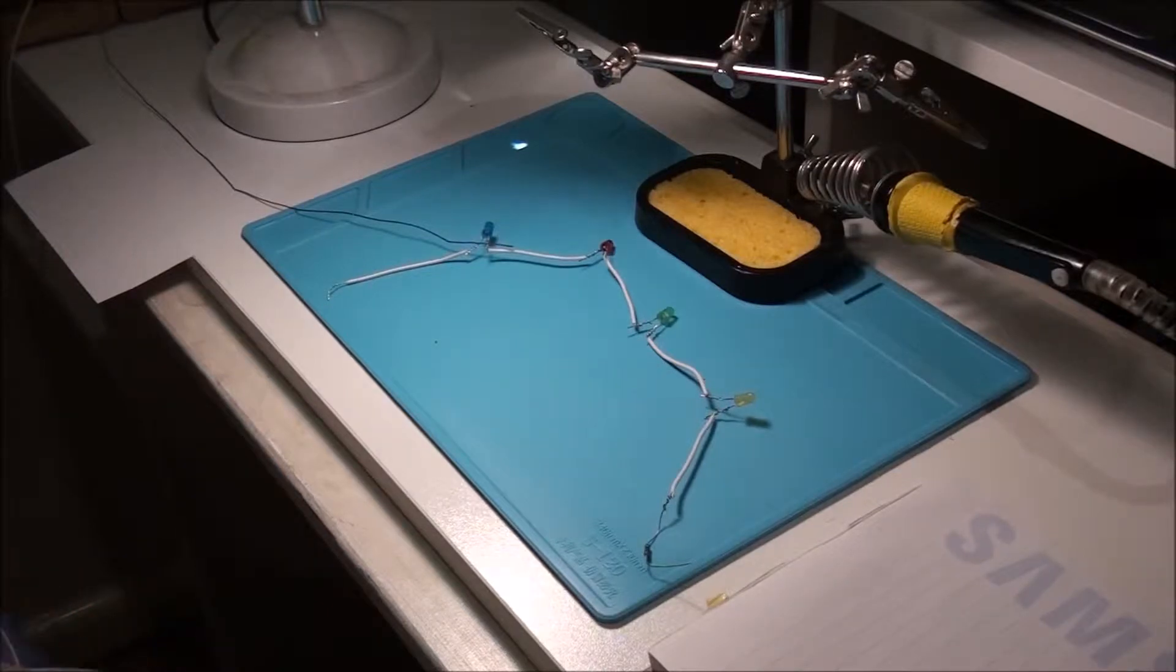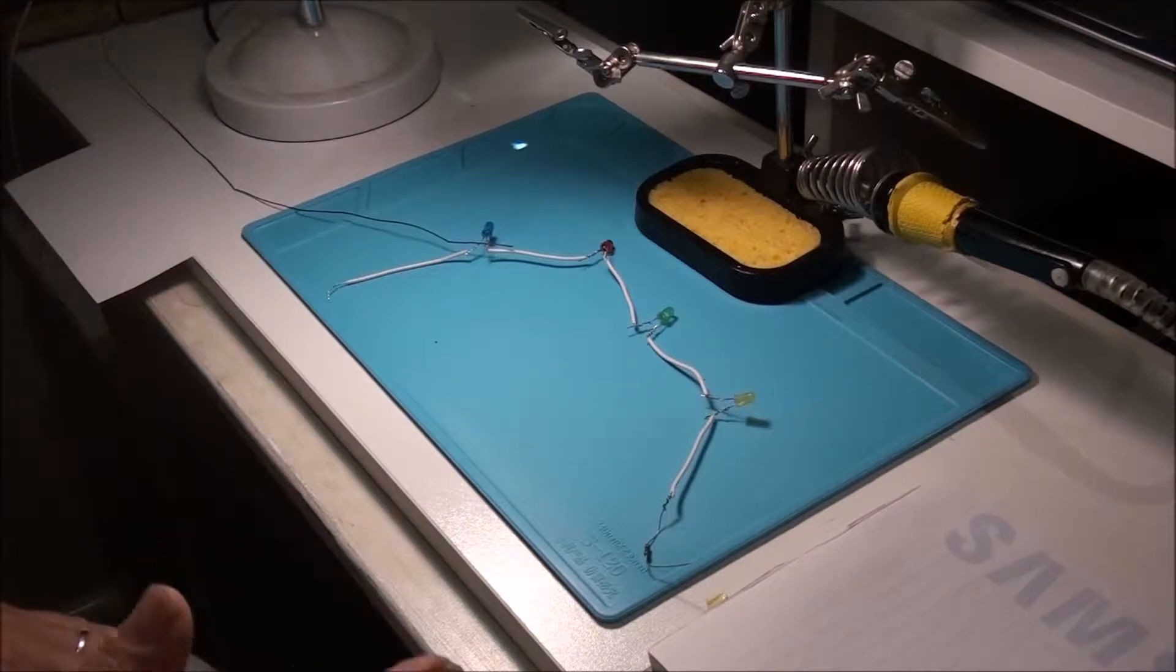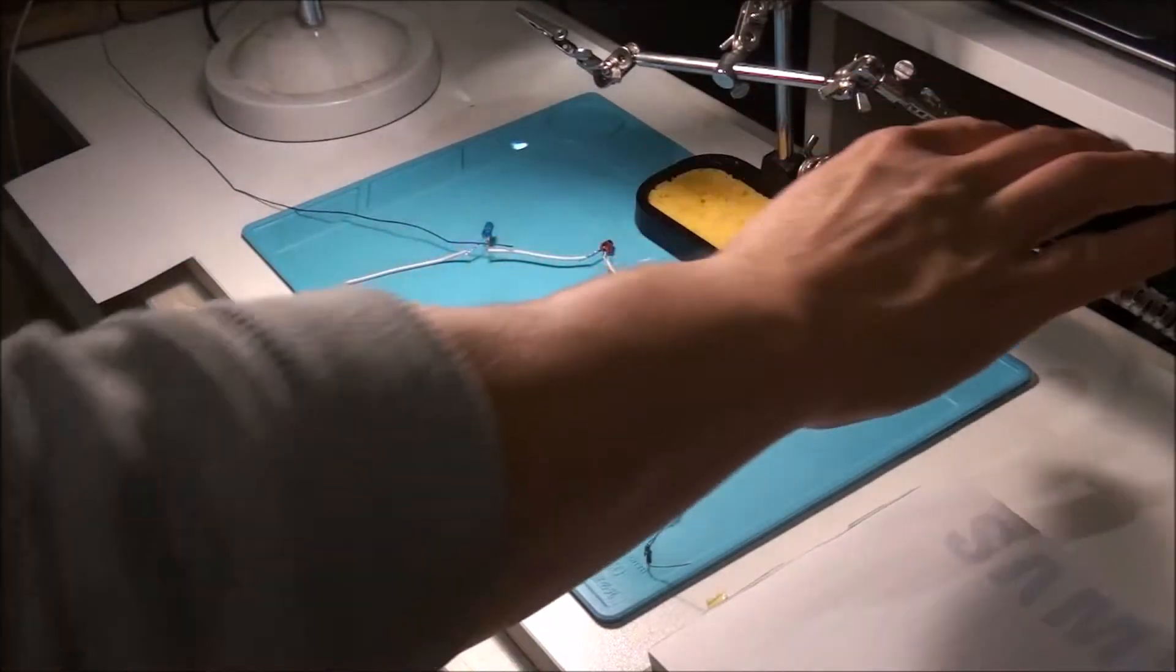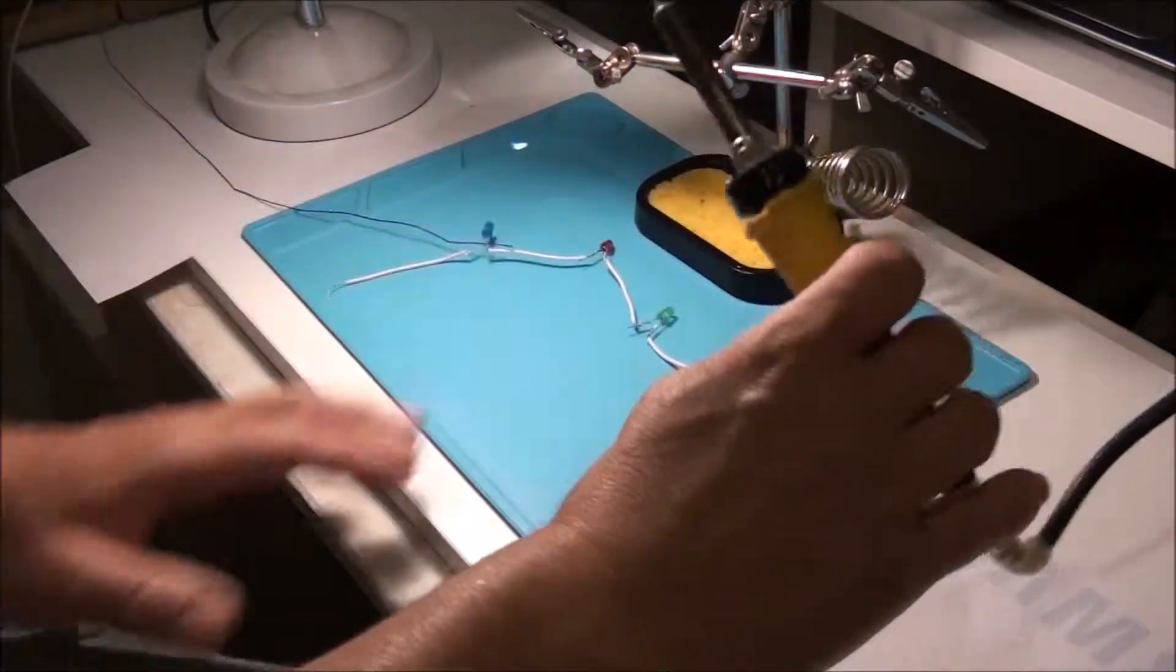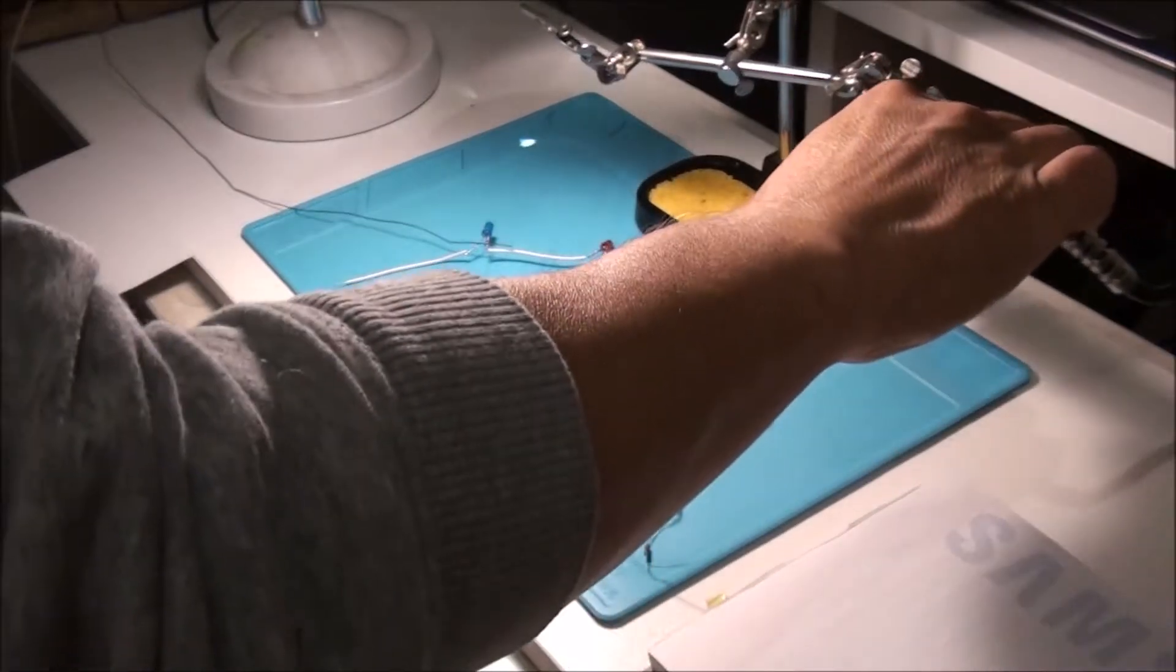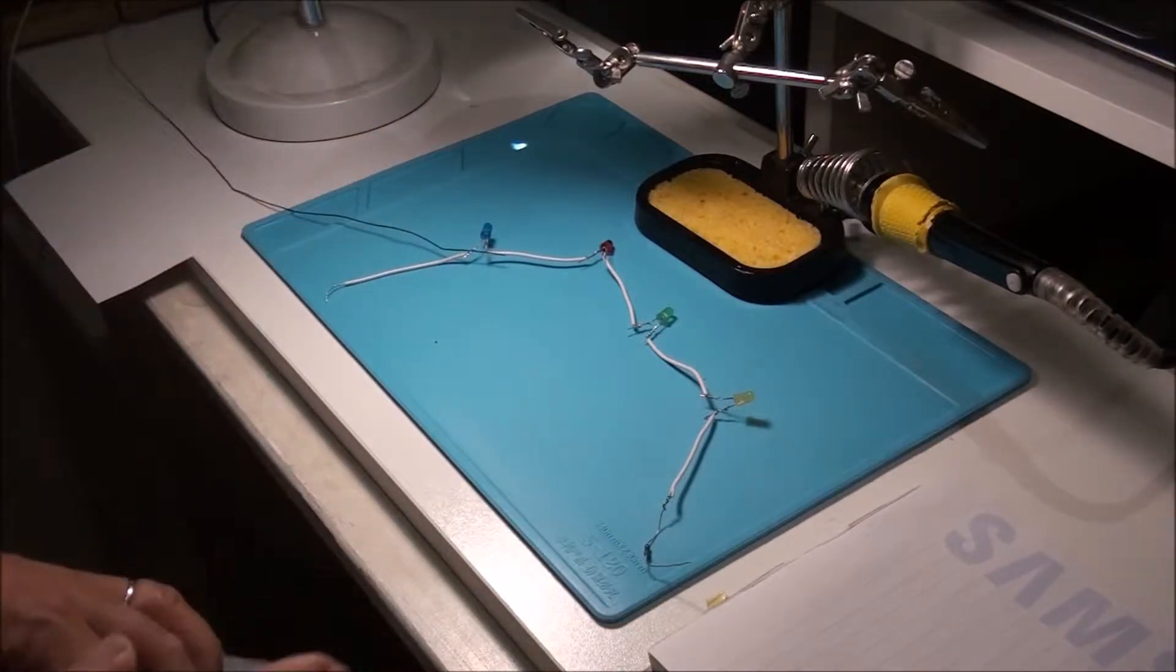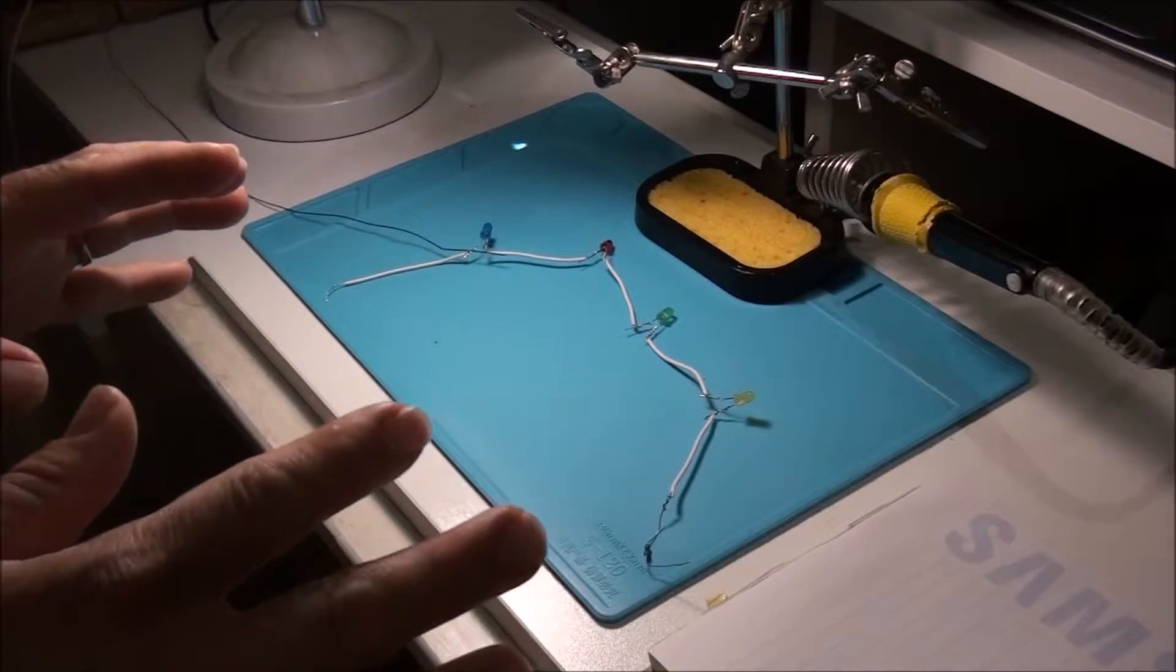Now, before you solder, make sure you have plenty of space. Make sure you have some kind of stand, like this one here, to mount your hot soldering iron so when you put the soldering iron down it won't burn anything. And just make sure that there's nothing which can burn nearby.